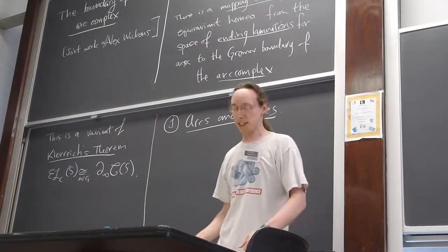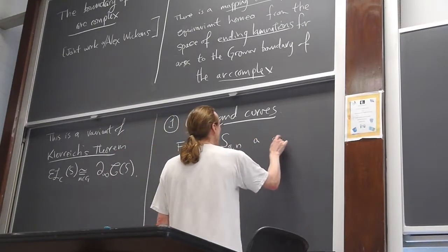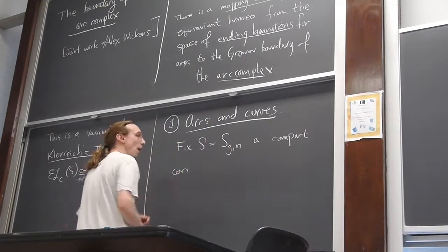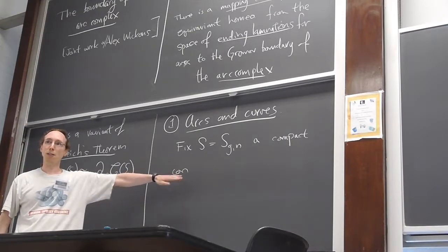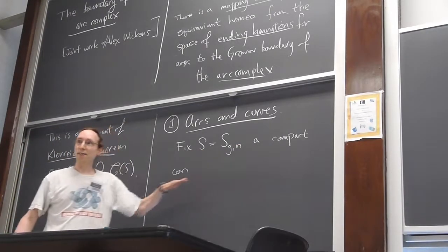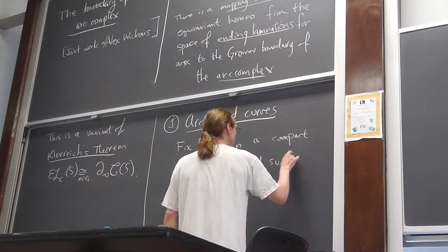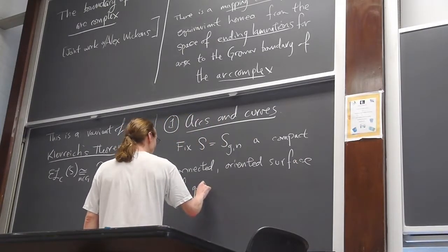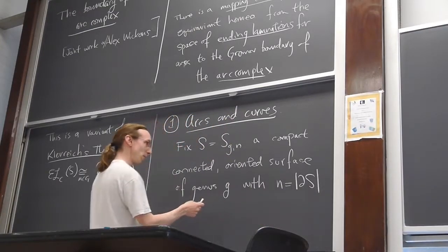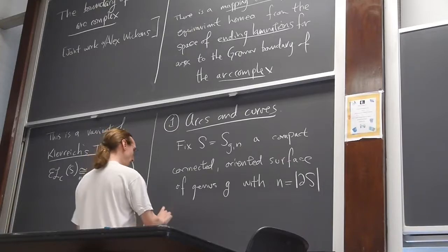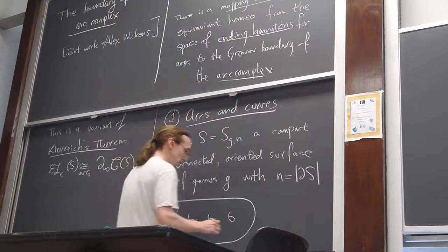Let me start at the beginning. Fix S = S_{g,n}, a compact, connected, oriented surface of genus g, with n equal to the number of boundary components. As an example, here we have the surface of genus three with two boundary components, so this is S_{3,2}.